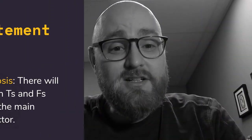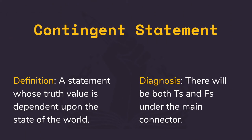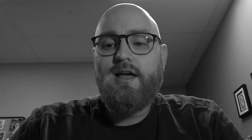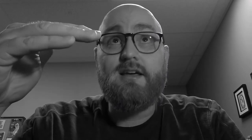Then in a contingent statement, that's every other statement that is true or false depending upon what the world looks like. When you're looking at the truth table, you will find that there's a mix of trues and falses underneath the main connector.